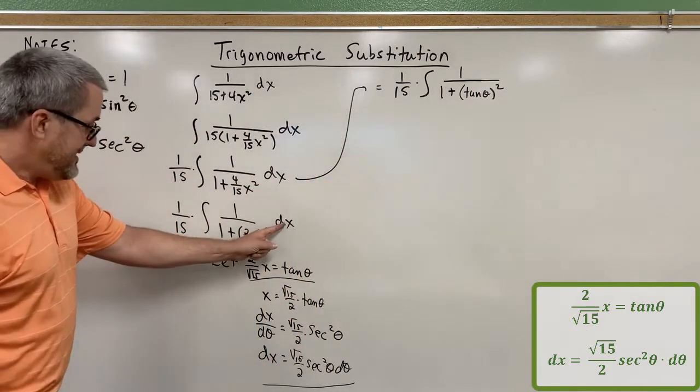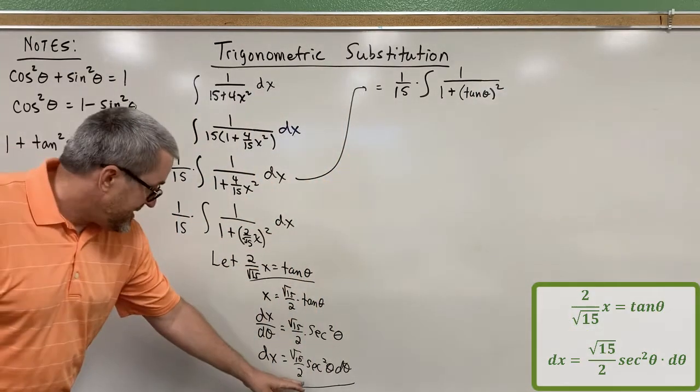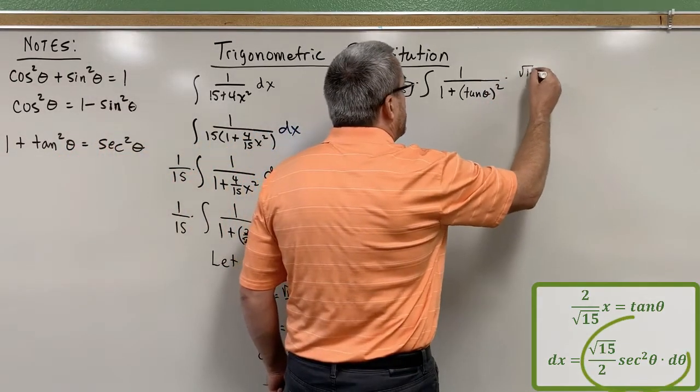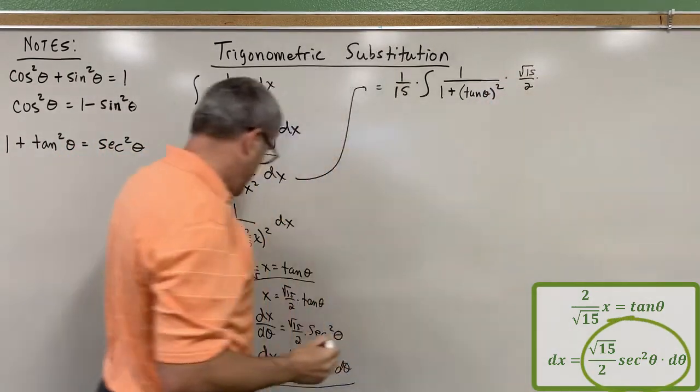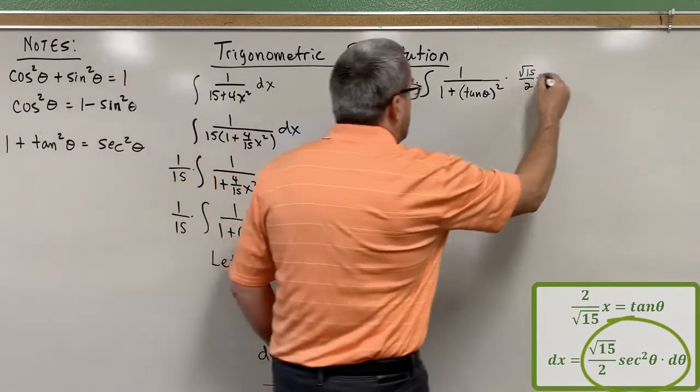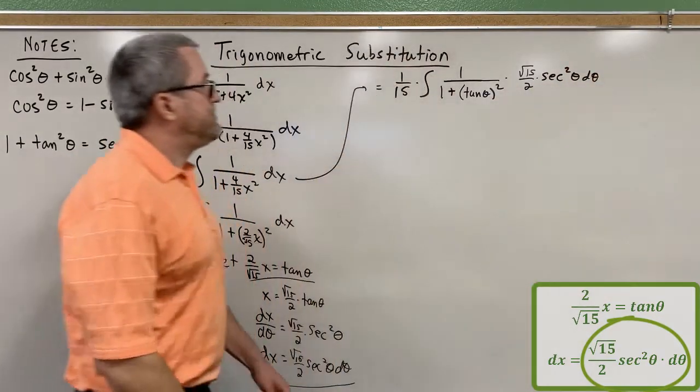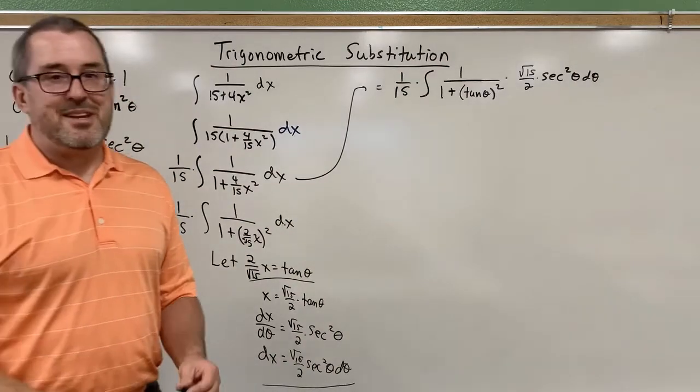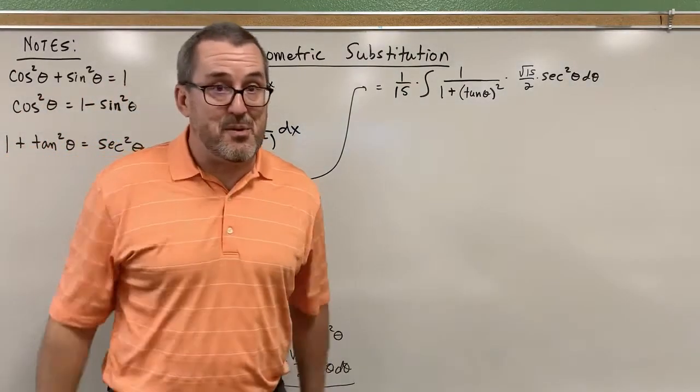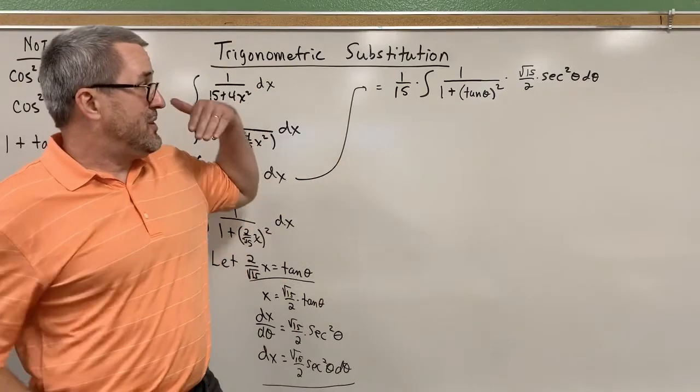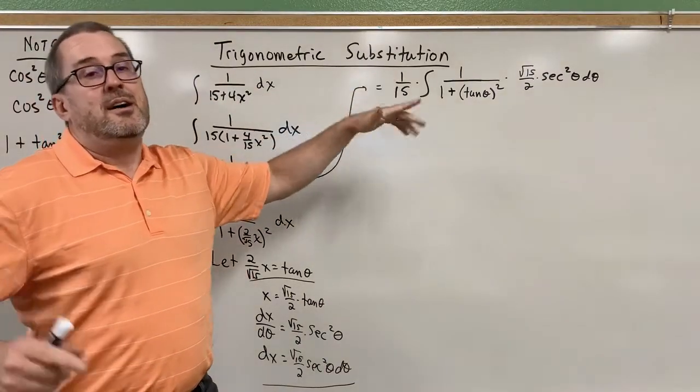And then that dx, because of the consequences, that dx is the square root of 15 over 2 times the secant squared of theta d theta. Now, at this moment, and even now you've seen this, hopefully you've seen the previous videos, and you know that even though it looks messy now, it's going to get un-messy here in a hurry.